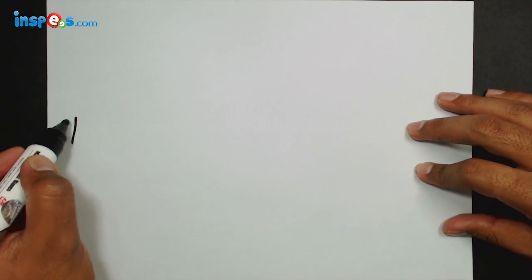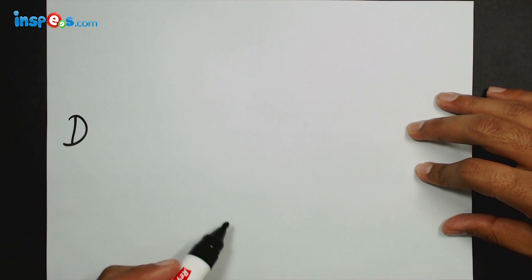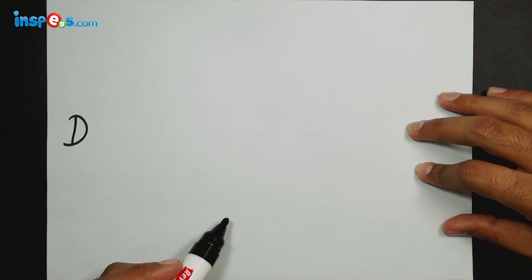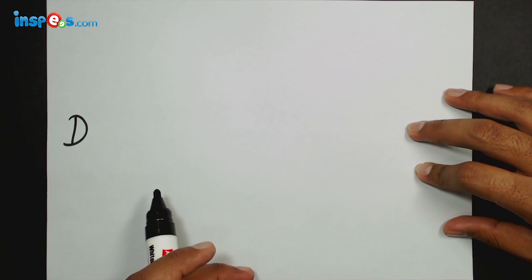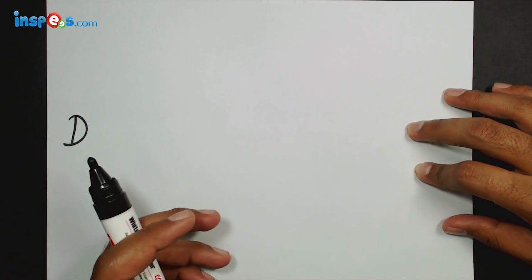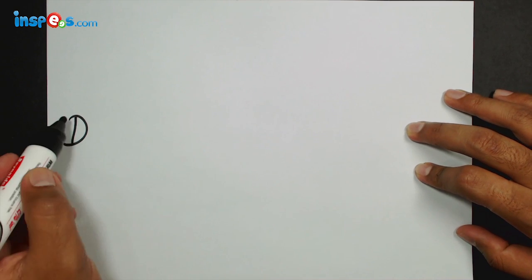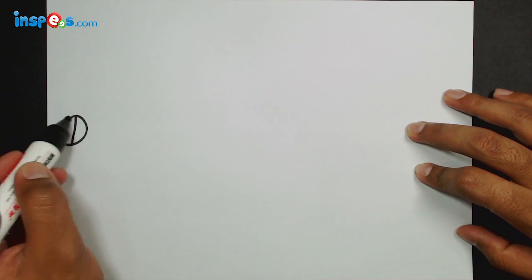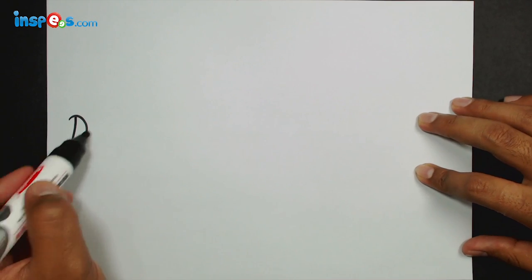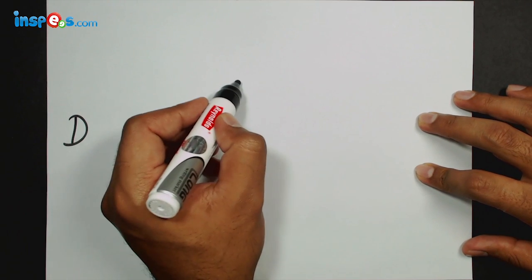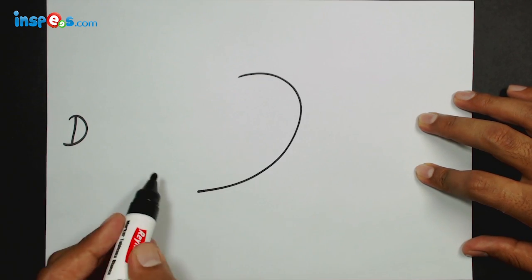So a regular D stands like this, but to make a parrot I'm going to make it more stylish, more rhythmic, more artistic. So let's start with this curve of D and I'll make it like this.